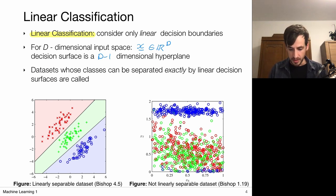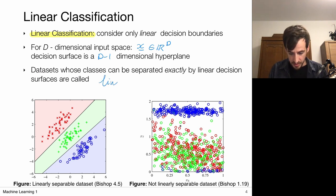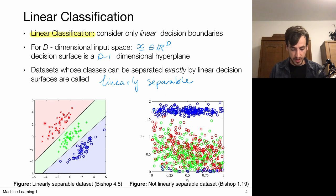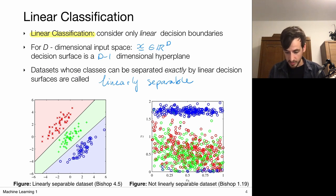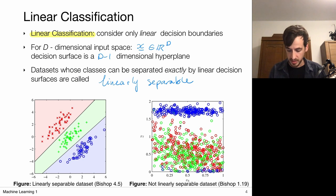A dataset whose classes can be separated exactly by linear decision surfaces is called linearly separable. If we inspect the left figure, all points can be perfectly separated via linear decision boundaries — so that dataset is linearly separable. Whereas in the other dataset, where points are scattered all over, there's no way to draw a linear decision boundary that perfectly separates the data — so that is an example of a dataset which is not linearly separable.